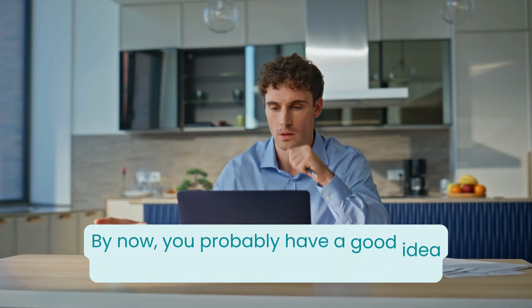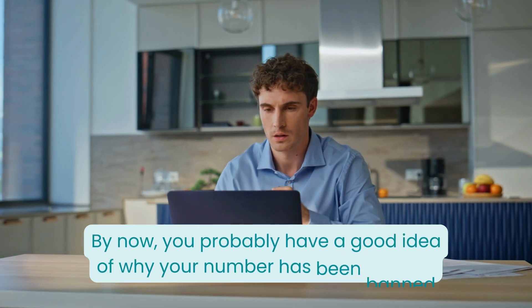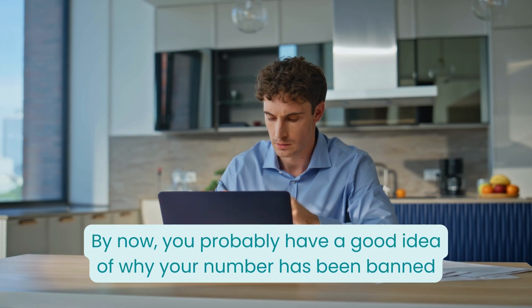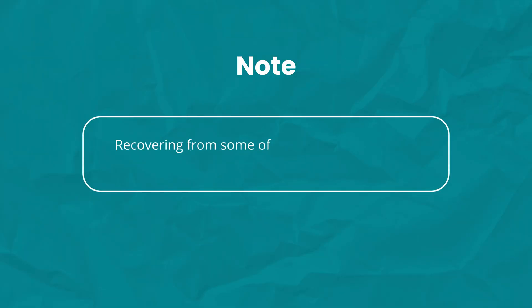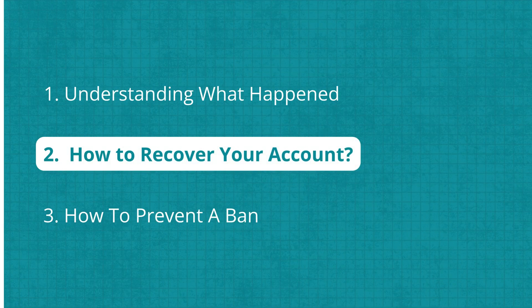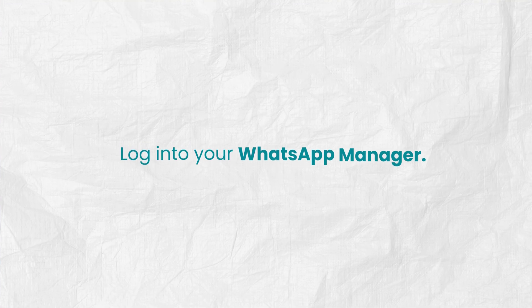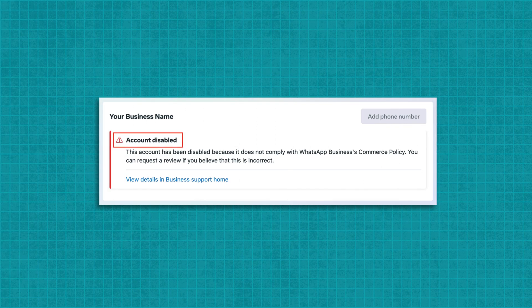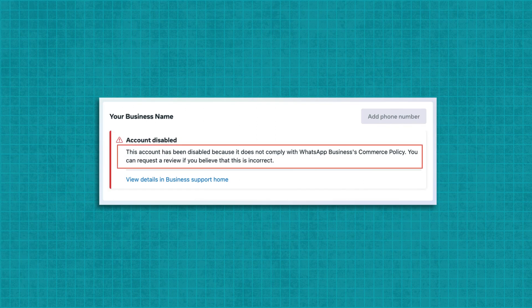By now, you probably have a good idea of why your number has been banned. Note that recovering from some of these issues is possible, but in other cases the ban might be permanent. Let's look at what you can do to recover your account. The first step is to log in to your WhatsApp manager, where you'll see an account disabled alert with details explaining why your account was restricted.